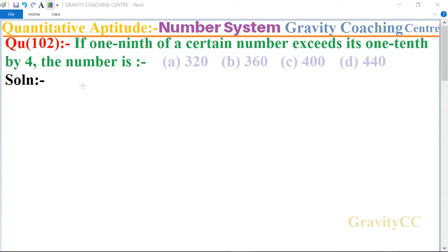Quantitative Aptitude, chapter Number System, question number 102: If 1/9th of a certain number exceeds its 1/10th by 4, the number is?